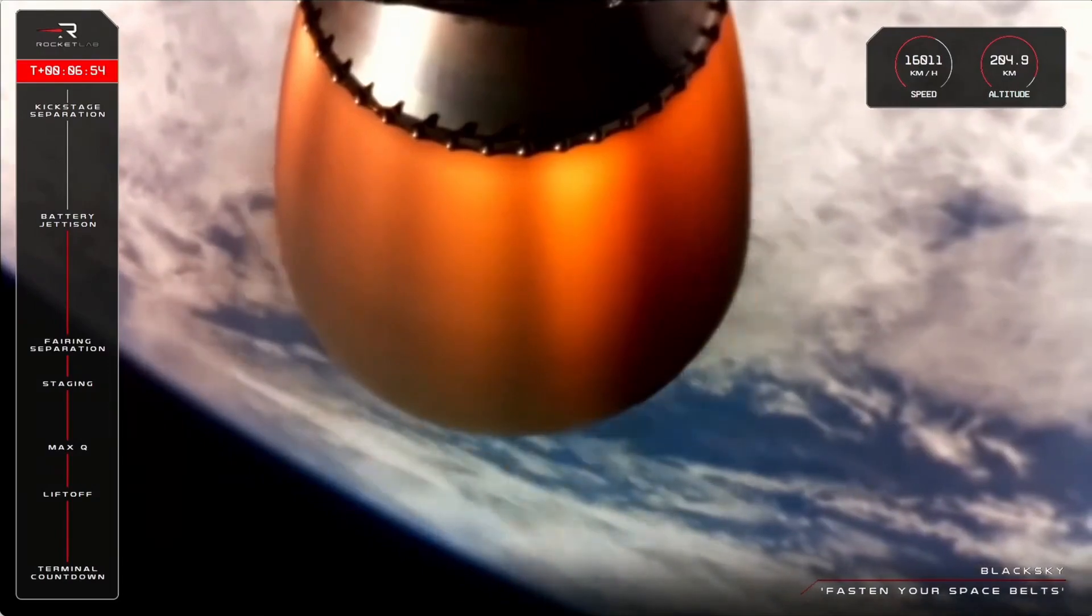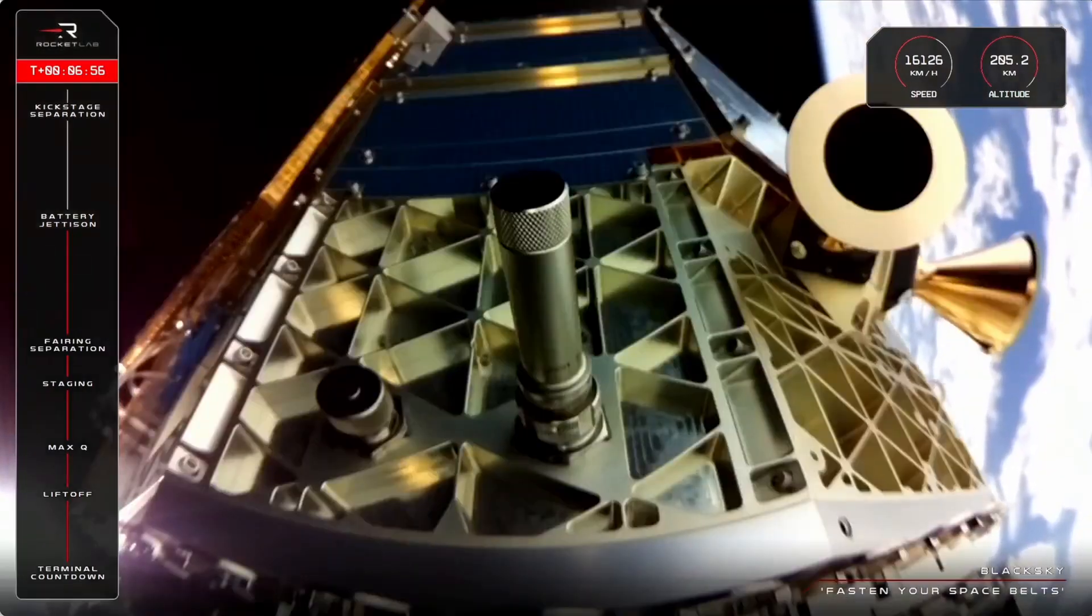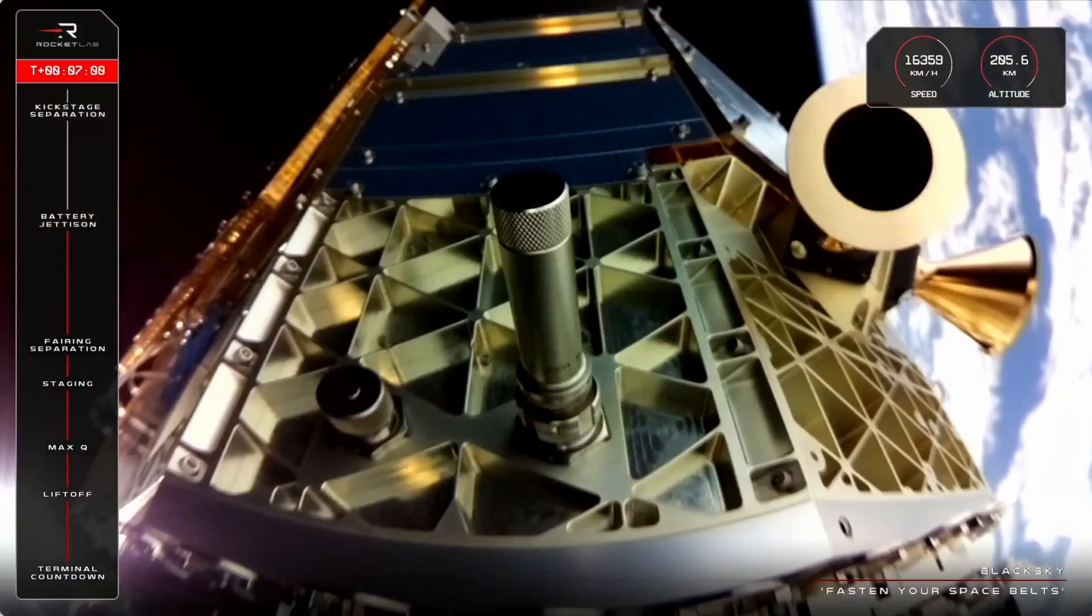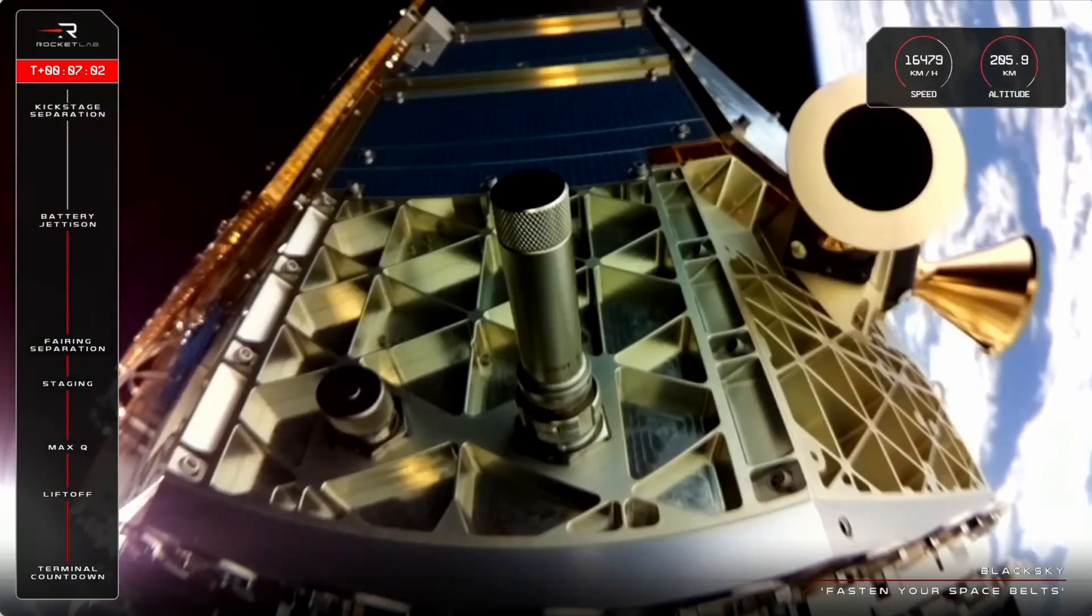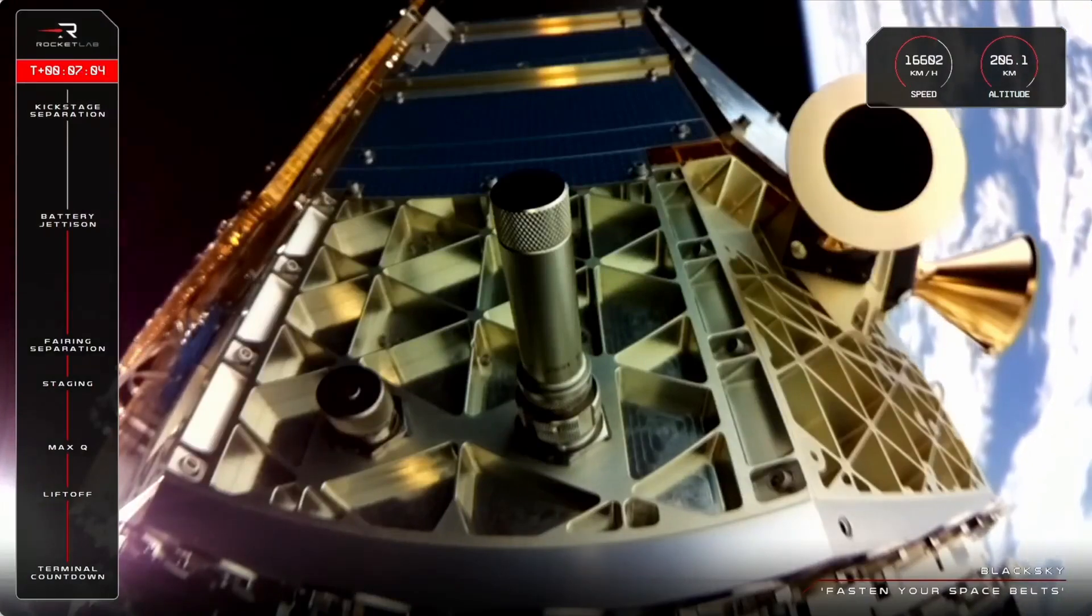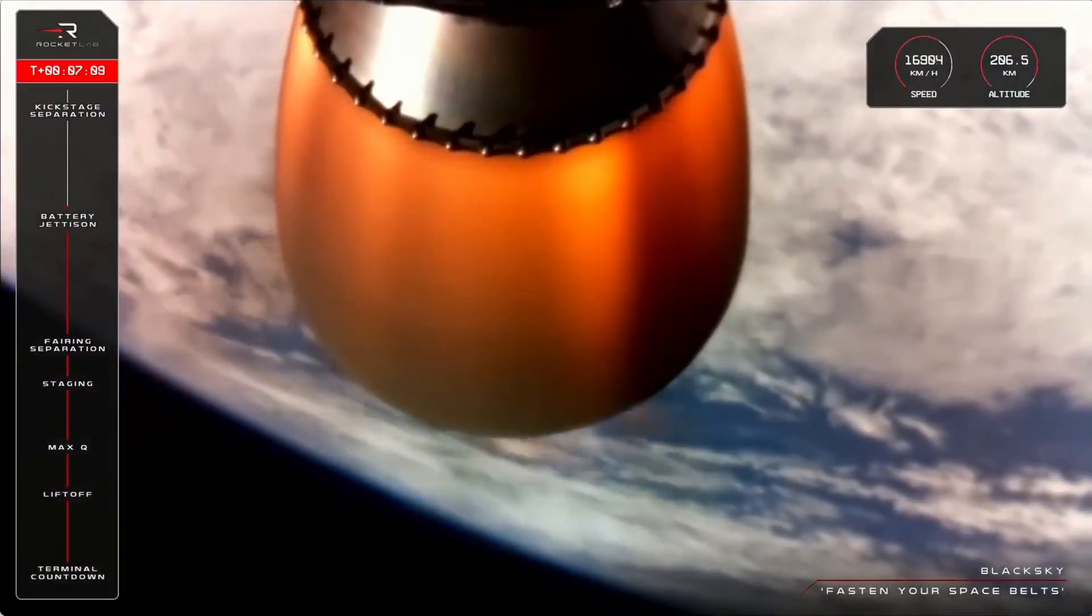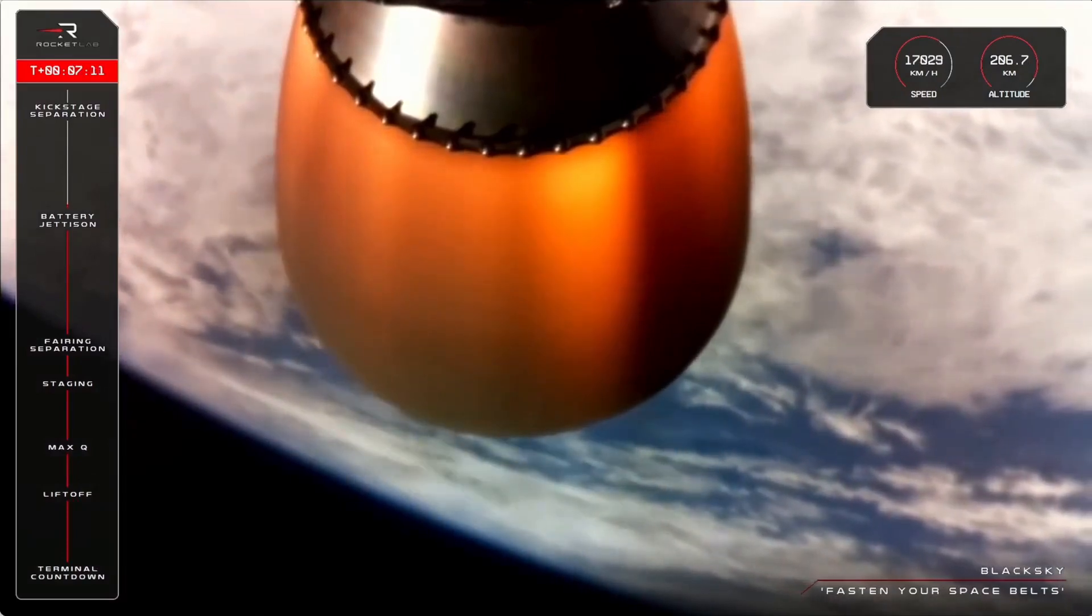We've passed most key milestones for this launch, with only a few more to go, including second engine cutoff. At SECO, the Rutherford engine will throttle down and then stop in preparation for kickstage separation. This marks the end of the first phase of the mission, which is expected at around nine minutes into the flight.